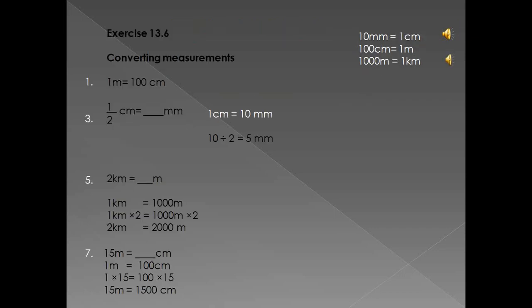Now we look at exercise 13.6 on page 73 — this is converting measurements. You need to memorize that there are 10 millimeters in one centimeter, 100 centimeters in one meter, and 1,000 meters in one kilometer. That is something you need to memorize in order to answer questions in a test. The first one: one meter equals how many centimeters? That is easy because you memorized that 100 centimeters equals one meter, so no sums are needed.